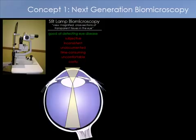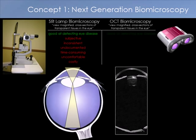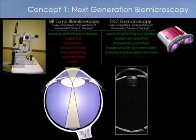Ultimately, the slit lamp illumination in a slit lamp biomicroscope allows the examiner to view magnified cross-sections of transparent tissues in the eye. And we know that OCT is very good at doing exactly that — viewing magnified cross-sections of transparent tissues in the eye. So we feel that OCT may be very good at detecting eye disease and potentially replacing slit lamp biomicroscopy in many situations.